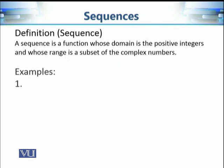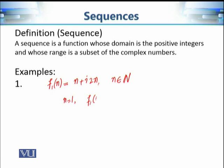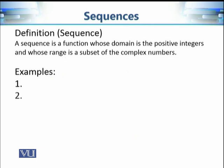Let's see some examples of complex-valued sequences. Consider f₁(n) = n + 2ni. Since the domain is the natural numbers and the outputs are complex numbers, it is a sequence. The first term is f₁(1) = 1 + 2i. The hundredth term is f₁(100) = 100 + 200i. Now consider a second example: f₂(n) = (2 − 1/n) + (5 − 1/n)i. Once again, the domain is the natural numbers and the outputs are complex numbers, so it is a sequence of complex numbers.